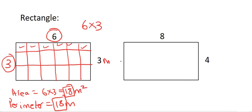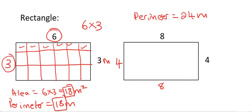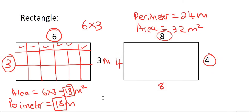Moving on to the example on the right-hand side — we know how to do this by now. To work out the perimeter, you say eight plus eight plus four plus four, which gives you 24 meters. For the area, that's just eight multiplied by four, giving us 32 meters squared. The way to work out the area and the perimeter of a square and a rectangle is pretty much the same.